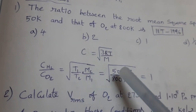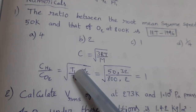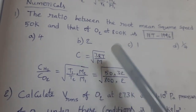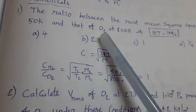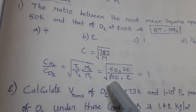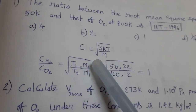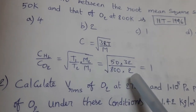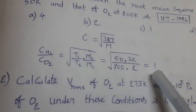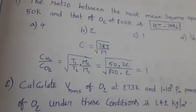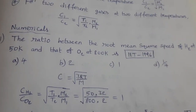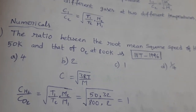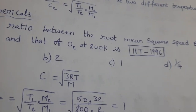T₁ (temperature of hydrogen) is 50 K, temperature of oxygen is 800 K, M₂ (molar mass of oxygen molecule) is 32, and M₁ (molar mass of hydrogen) is 2. That equals 1. So option C is the answer. This question was given in the 1996 IIT exam — a very simple question.